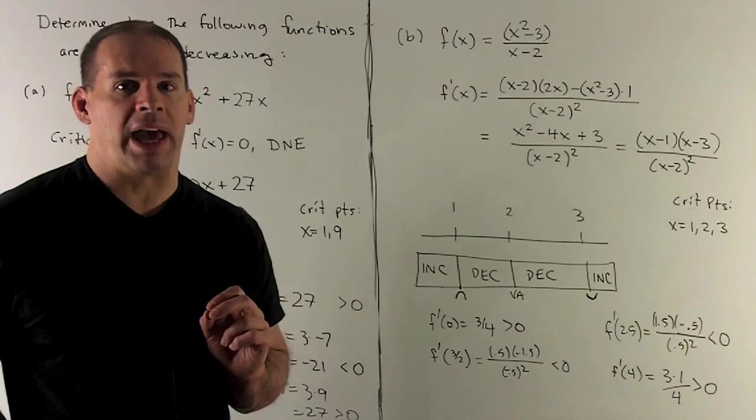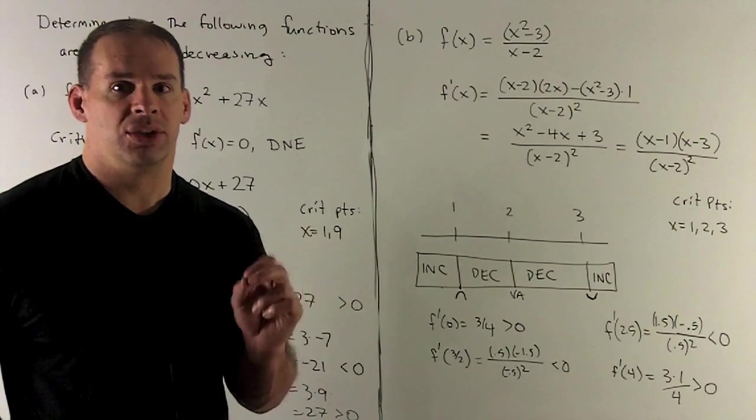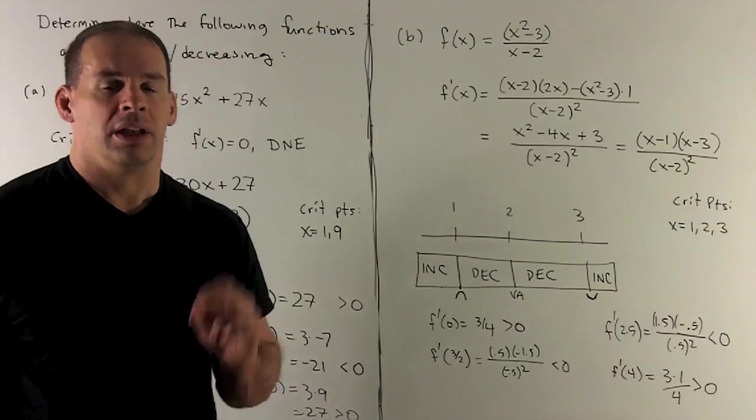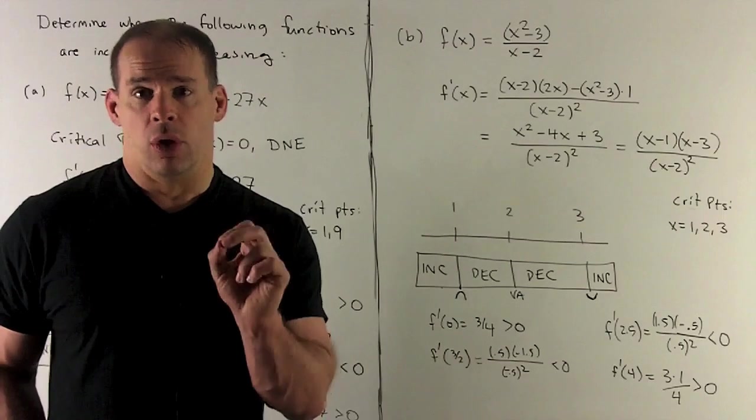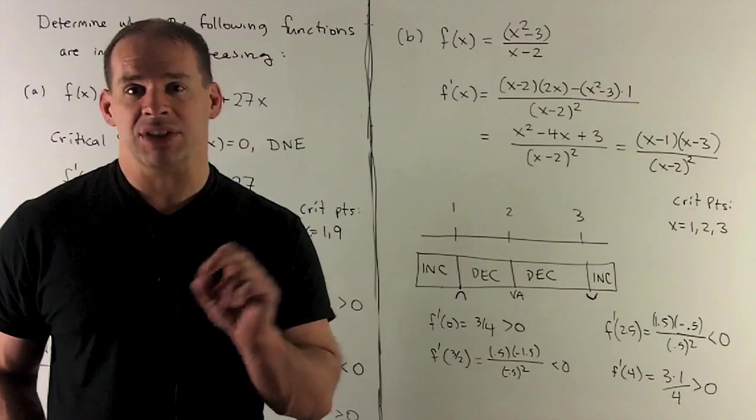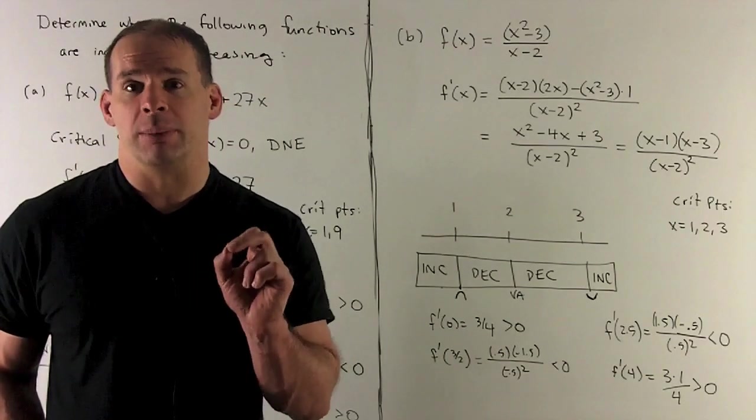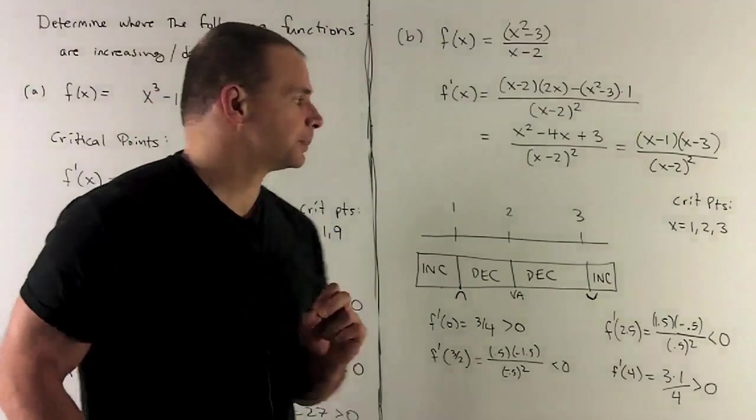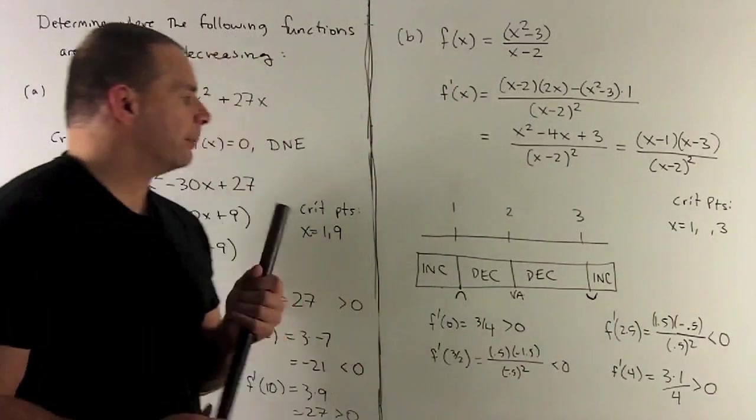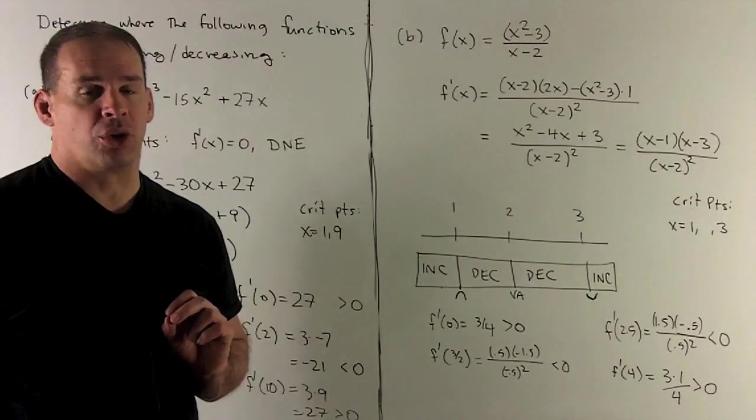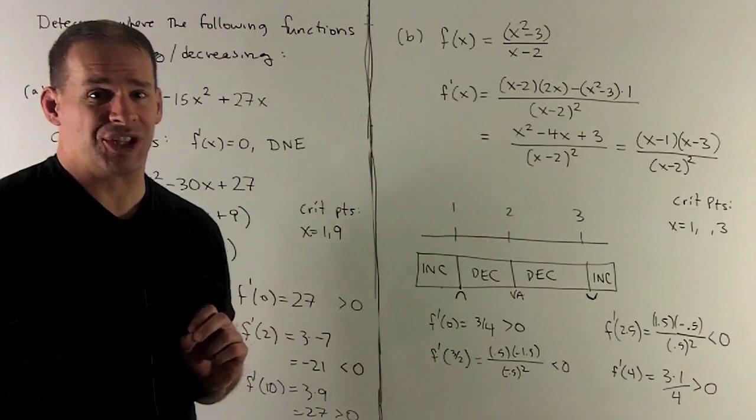So our critical points are going to be at x equal to 1, 2, and 3. Now, note 2 isn't really a critical point because our function is not defined there anyway. Note, at 2, we're dividing by 0. So that's really going to be a vertical asymptote. Okay, so we should get rid of that. Now, that's still going to mark a division on the graph where I would need to check each side.